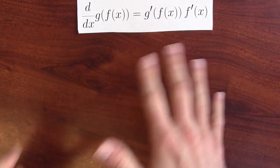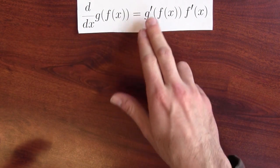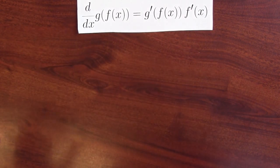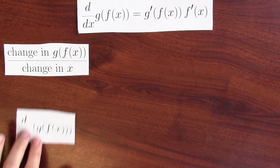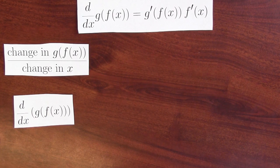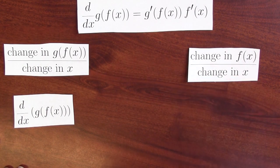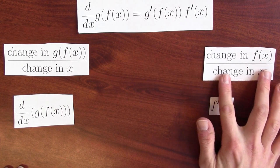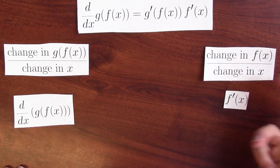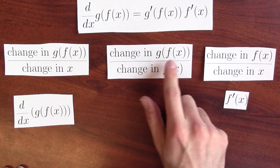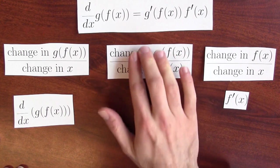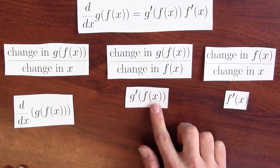The chain rule really is capturing what happens when you chain together these changes. The derivative of g of f of x is g prime of f of x times f prime of x — think of it as chaining together different changes. What I'm trying to calculate is how changing x changes g of f of x. I know how changing x will change f of x — that's what the derivative of f is measuring, the ratio of output change to input change. And in between, changing f of x will change g of f of x in some way.